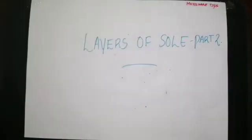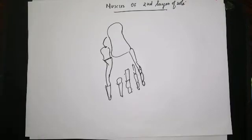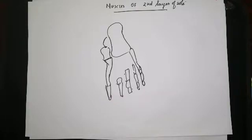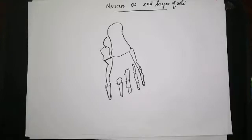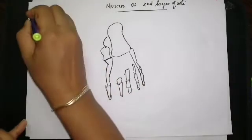This is the second part of the video regarding the layers of the sole. In this video we will be discussing the muscles of the second layer of the sole. The muscles constituting the second layer of the sole are the muscles of the posterior compartment of the leg — specifically the flexor digitorum longus, the flexor hallucis longus, the flexor digitorum accessorius, and the lumbricals.